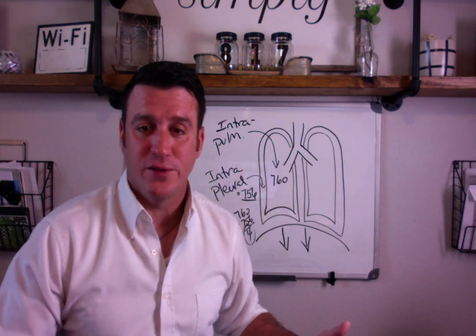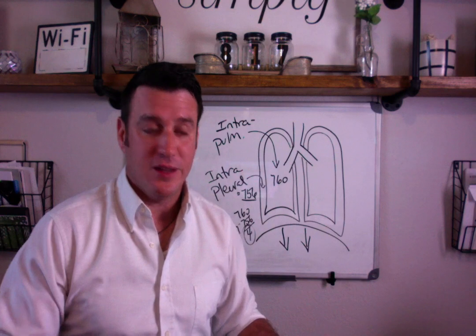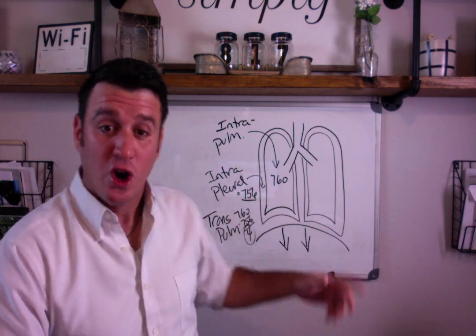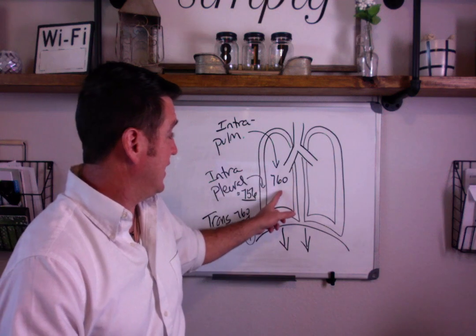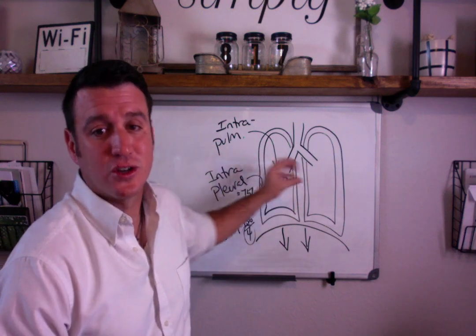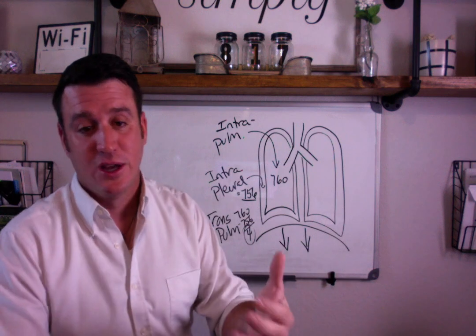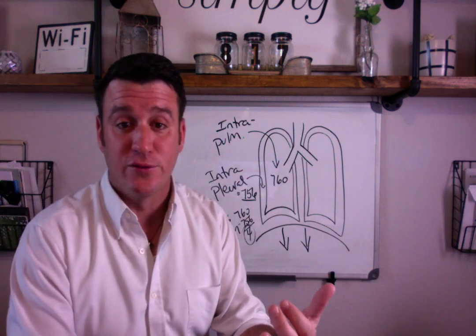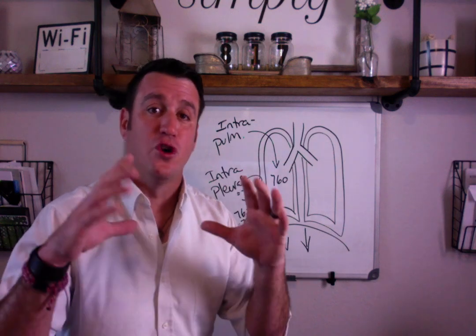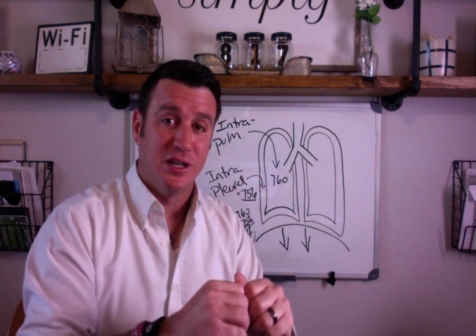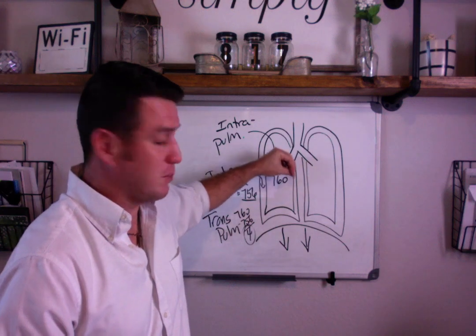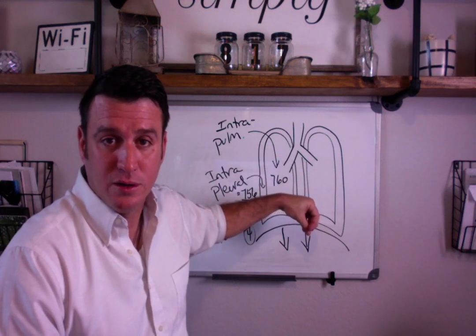Without that balance, our lungs don't function normally. If the intrapleural space becomes disrupted — or if intrapleural pressure becomes greater than intrapulmonary pressure — your lungs are going to collapse, whether it's caused by pleural effusion, which is fluid, or by an increase in air. Both are going to collapse lung tissue because intrapleural pressure is now greater than intrapulmonary pressure.